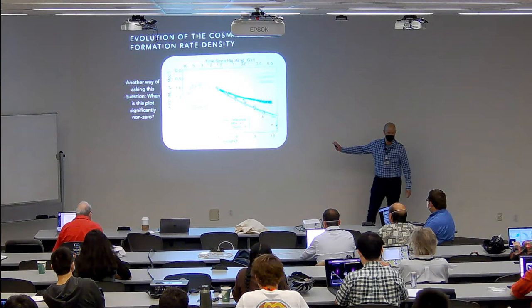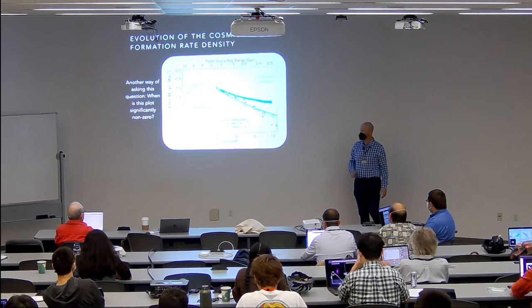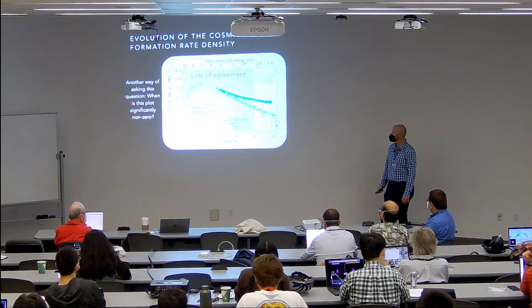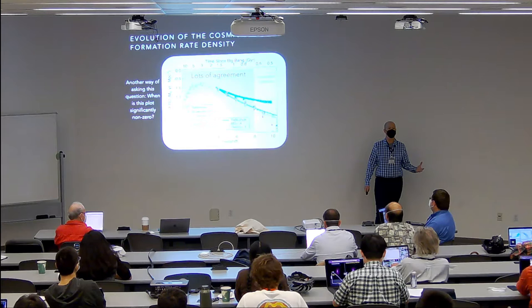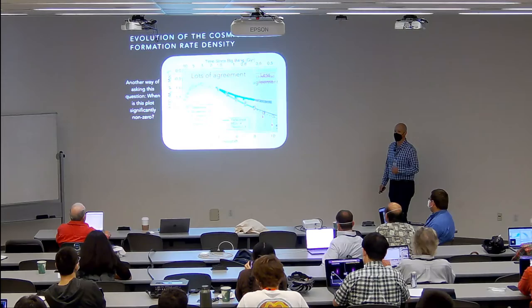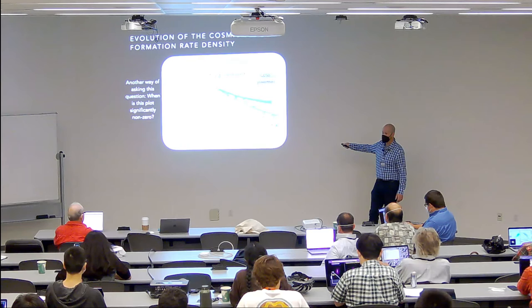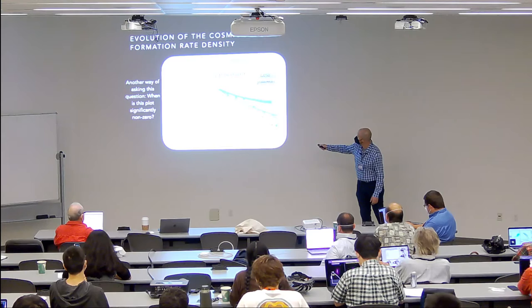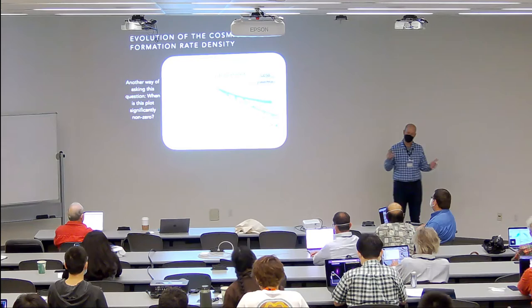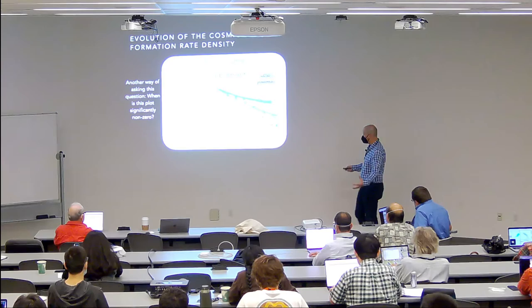When is this plot significantly non-zero? What does the redshift-10 universe look like? Looking at what astronomers have done over the past couple of decades, there's good agreement at redshift less than 8. But when we push to regimes where Hubble is really at its limits, there's disagreement: does the cosmic star formation rate density continue its smooth evolution out to redshift 10 and beyond, or is there an accelerated decline at redshift greater than 8?